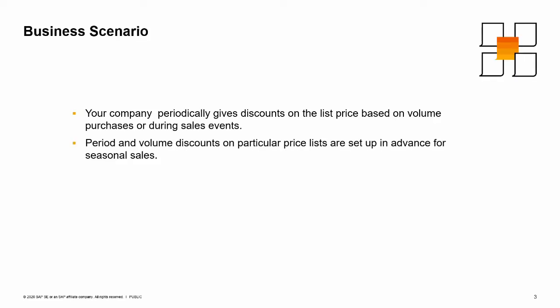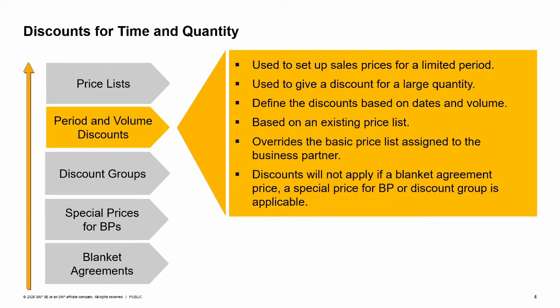Imagine that your company periodically gives discounts on the list price based on volume purchases or during sales events. Period and volume discounts on particular price lists are set up in advance for seasonal sales. A basic price for the product may not be enough. You may want to set up sale prices for a limited time period, or give a discount when a customer buys a large quantity. Period and volume discounts allow you to define discounts by dates and based on volume, based on an existing price list.